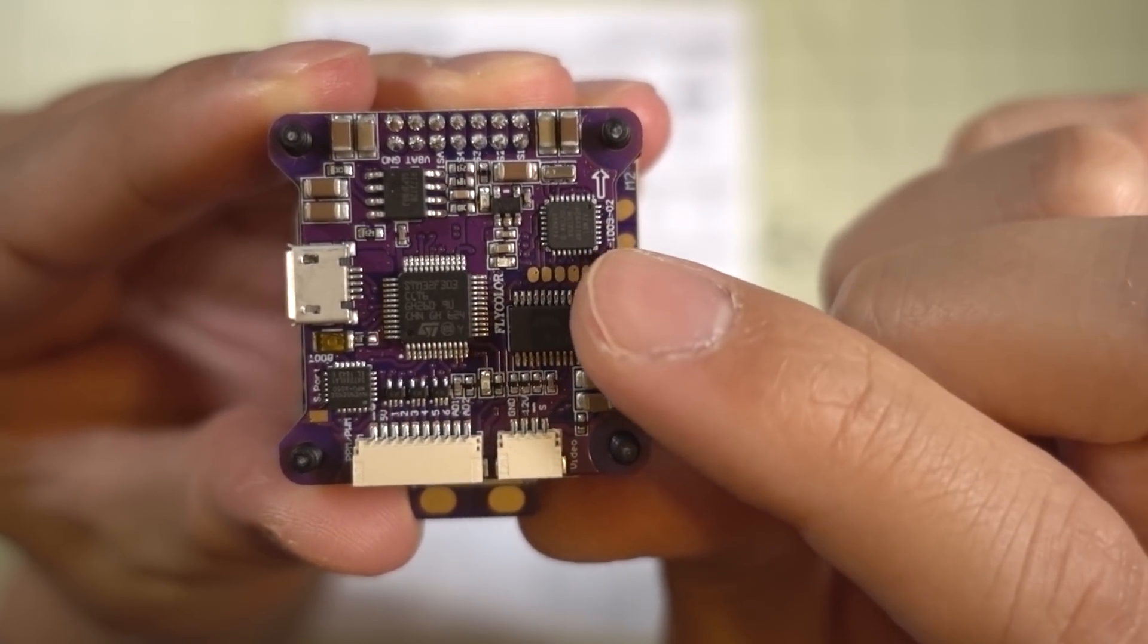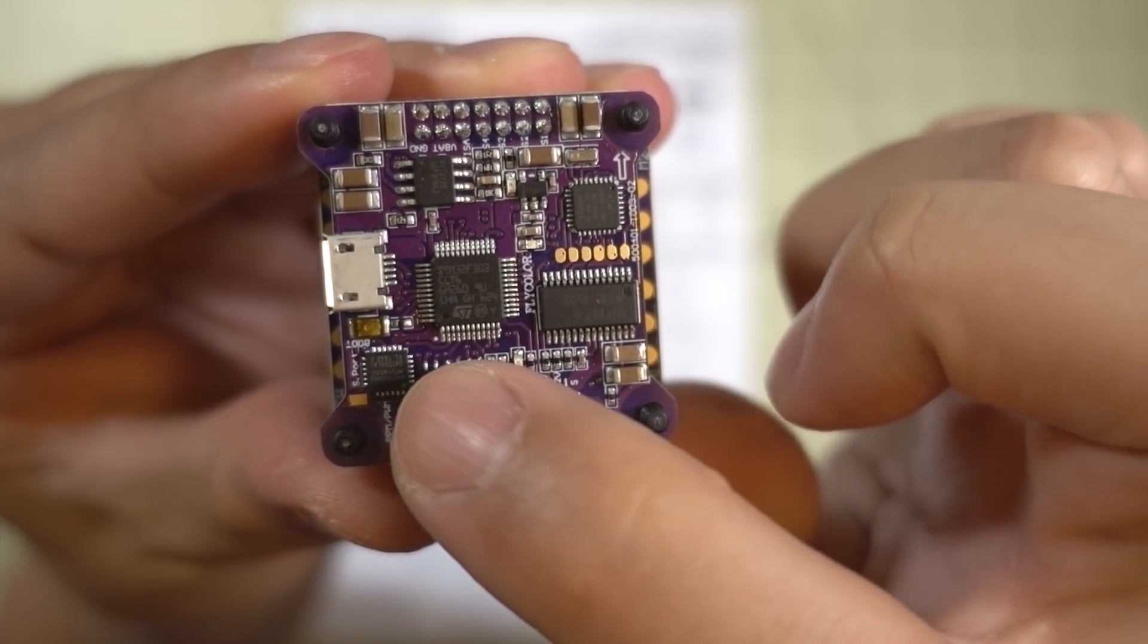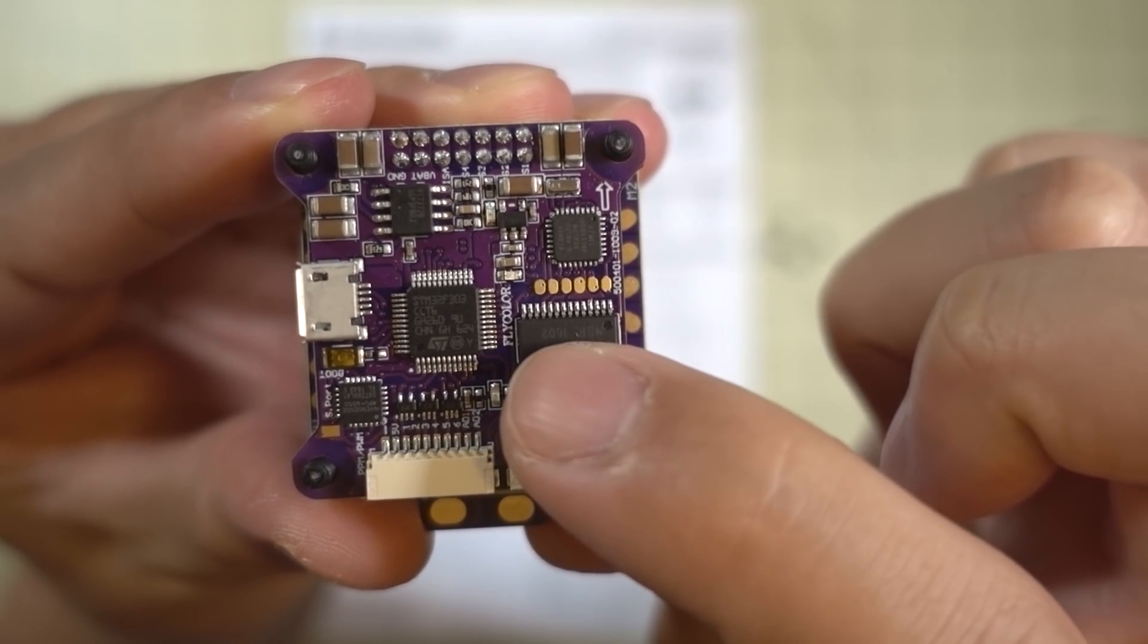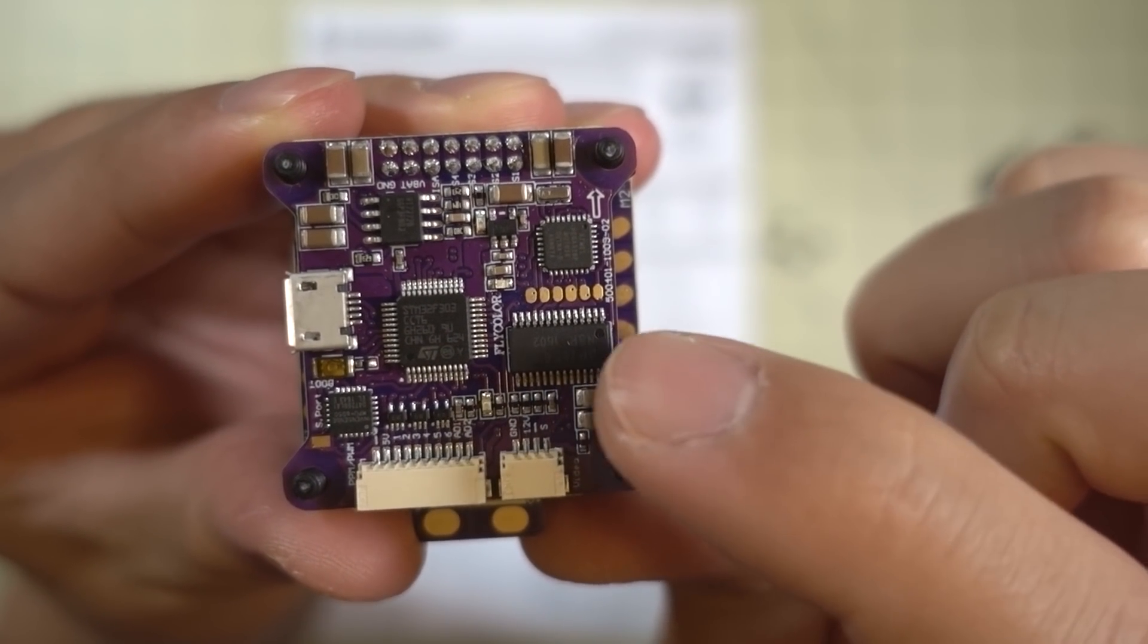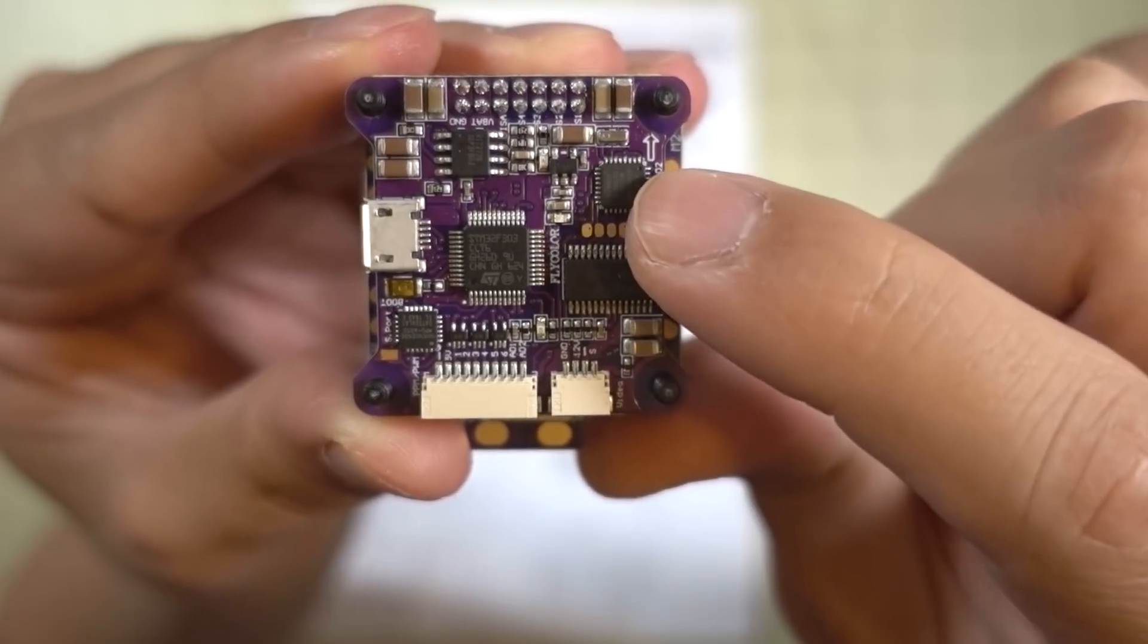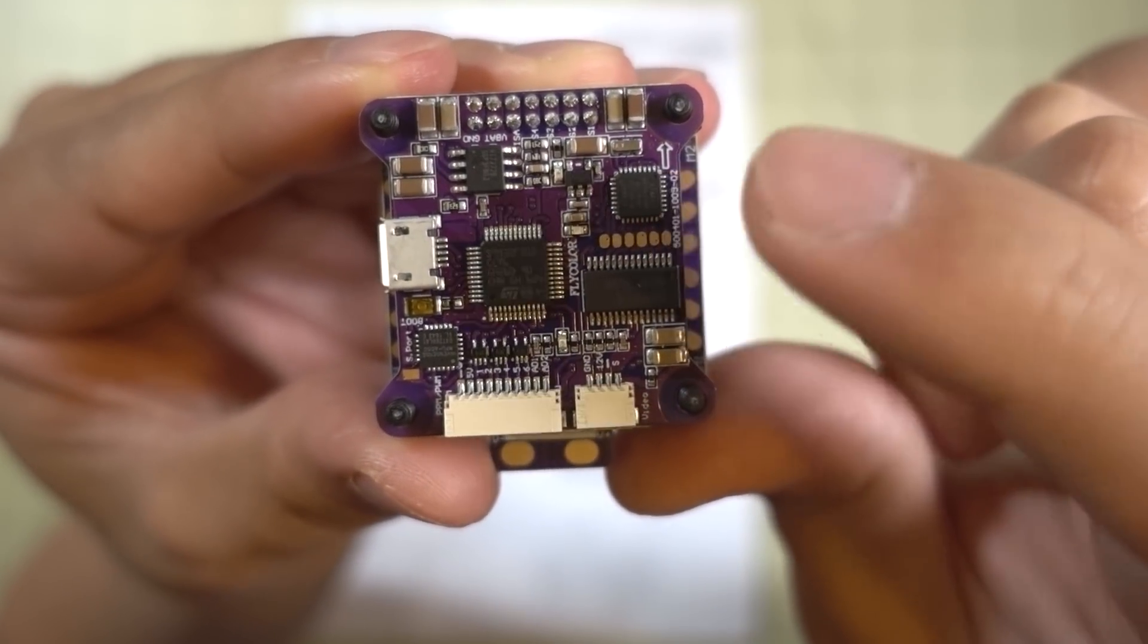Taking a closer look at the top of the flight controller, you've got your F3 chip here. You've got your 6050 gyro there. And this is a max chip here for your OSD. And then this is an Atmel chip also for programming your OSD.